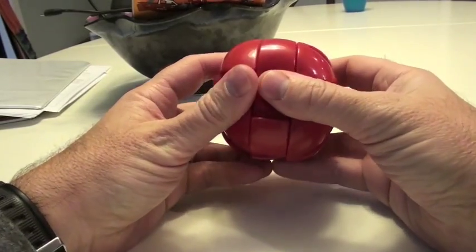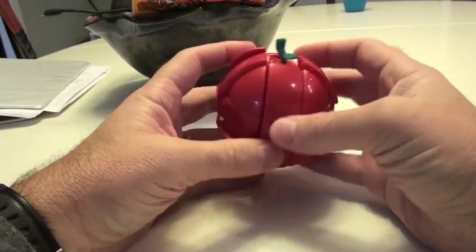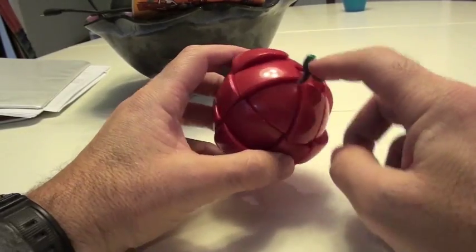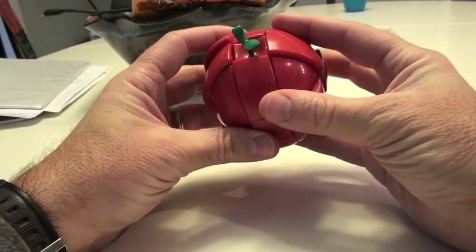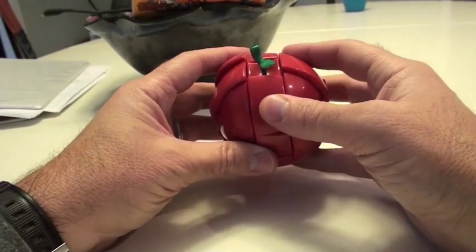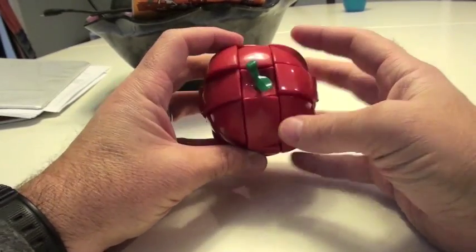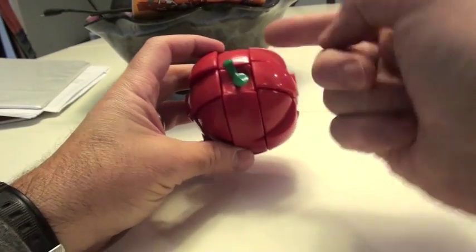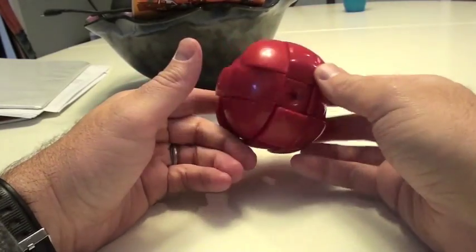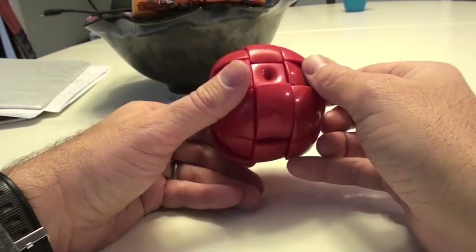So when approaching this puzzle over here, what we're going to do is we're going to start off by getting our cross. We'll start off with, say, the top layer over here. Now, the good news is all of these edges are going to look exactly the same, so I've got so many to choose from.